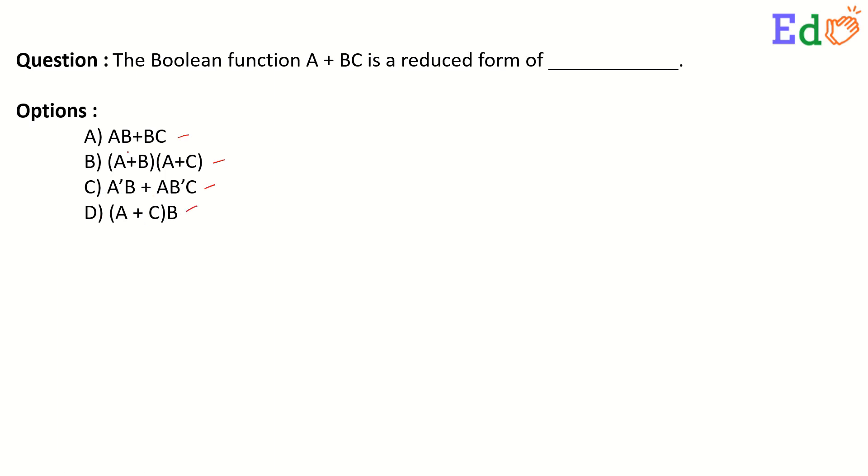Now if we look at the options carefully, the first option has both the factors AB plus BC, which is not present in the reduced form, so this is not the correct option. The next one we have to actually reduce it down to find out whether it is the reduced form of this.